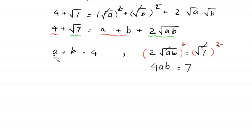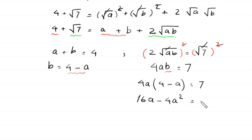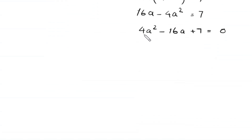From the equation a plus b equals 4, we get b equals 4 minus a. Substituting this into 4ab equals 7 gives us 4 times a times (4 minus a) equals 7, which expands to 16a minus 4a² equals 7. Rearranging gives the quadratic equation 4a² minus 16a plus 7 equals 0. This is a quadratic equation and is factorable.